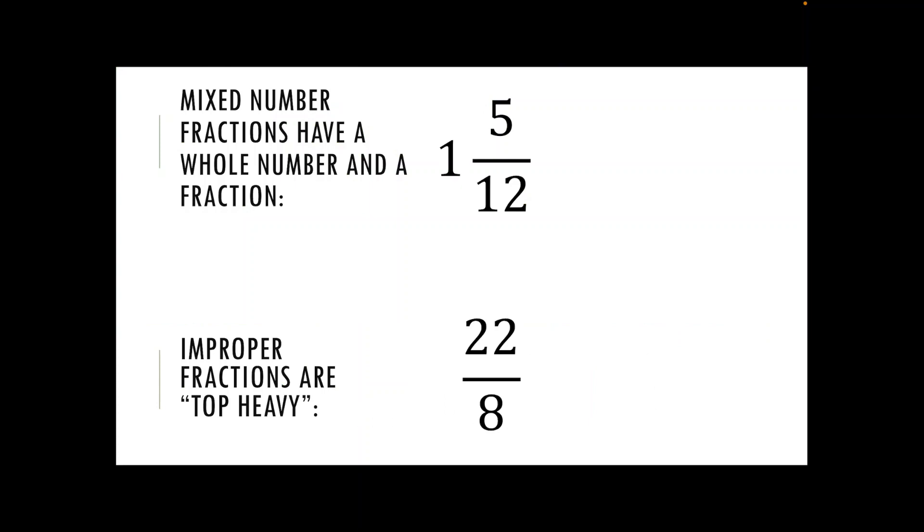Mixed number fractions have a whole number part, so here we've got one whole number and five twelfths of our fraction. An improper fraction is what we call top heavy, so that's where our top number is just bigger than our bottom number.